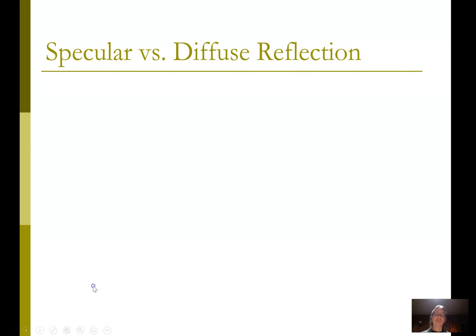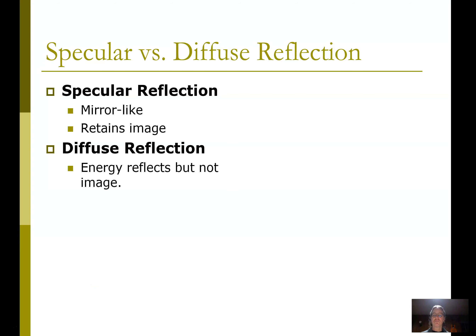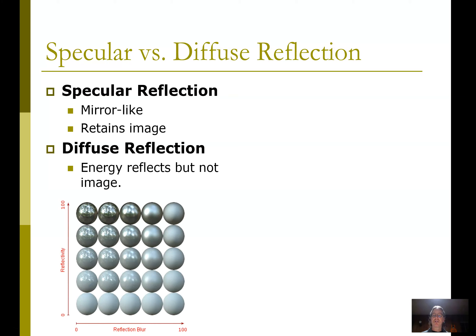Specular versus diffuse. A specular reflection is when it looks like a mirror and retains the image. Diffuse reflection does not retain the image, but you can see it in every direction. The energy reflects, but not the image. Where the surface is reflective you can see the specular reflection and make out the image. On the opposite side it's blurry — you can't see an image at all; it's gray, reflecting the light but not in any particular direction. That's the diffuse reflector.